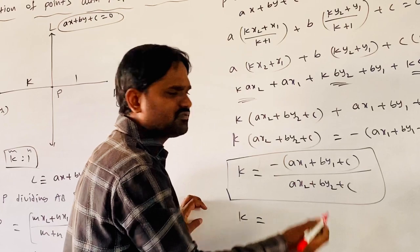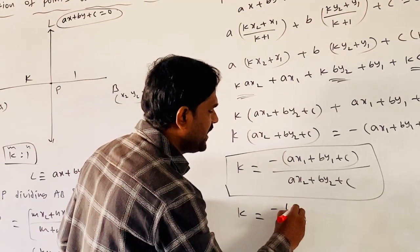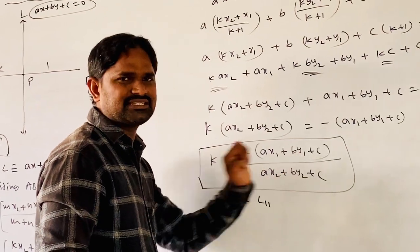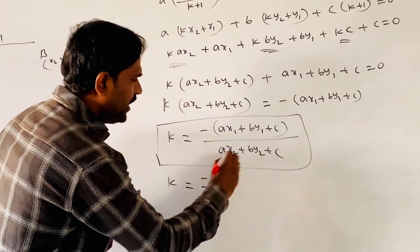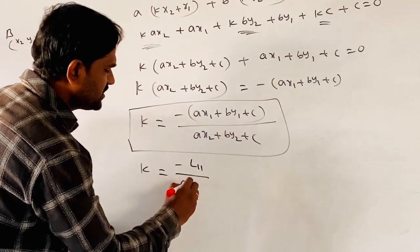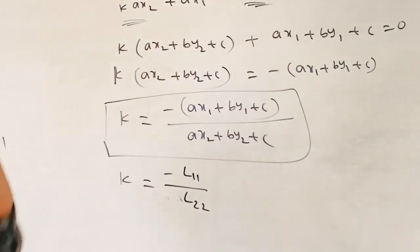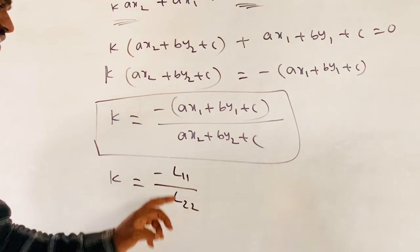L11 means at point (X1,Y1): L11 equals AX1 plus BY1 plus C. L22 means at point (X2,Y2): L22 equals AX2 plus BY2 plus C. We call these notations.